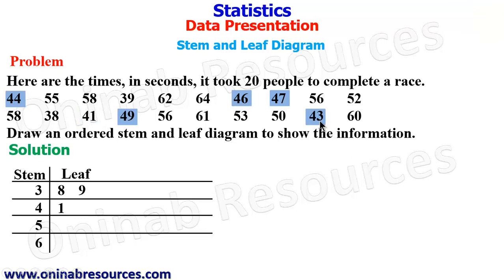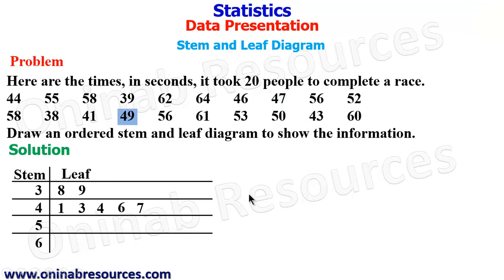We are done with 41. The next number is 43; the unit digit is 3, so we record it next to 1 under the leaf column. Then 44: we write 4 on the leaf column. The next number is 46; we write 6, the unit digit for 46. Then 47: the unit digit is 7, so we record 7 under the leaf column. Then 49: we record only 9 on the leaf column. That is the end of the numbers in the 40s.